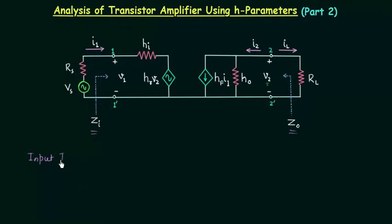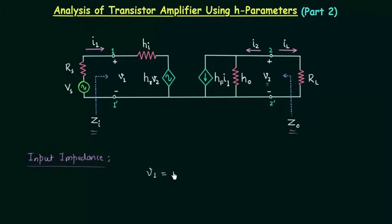Input impedance is represented by Z subscript i. The input impedance is defined as the impedance seen from terminals 1 and 1'. From Ohm's law, the input voltage Vi is equal to the input current I1 multiplied with the input impedance Zi. So Zi is simply equal to V1 divided by I1.